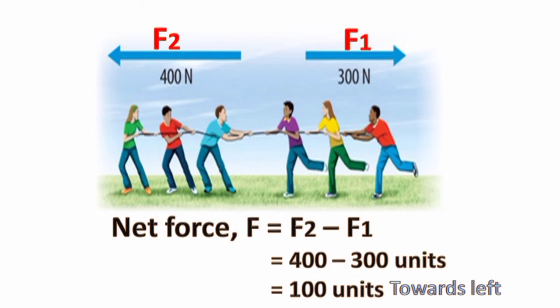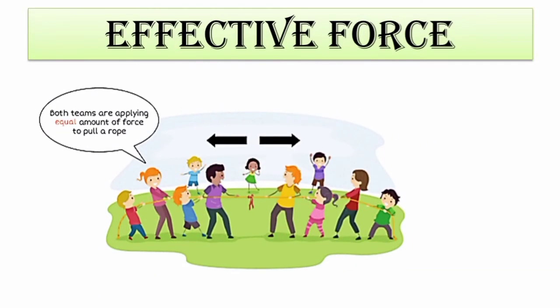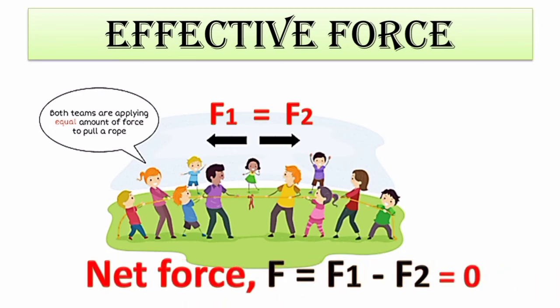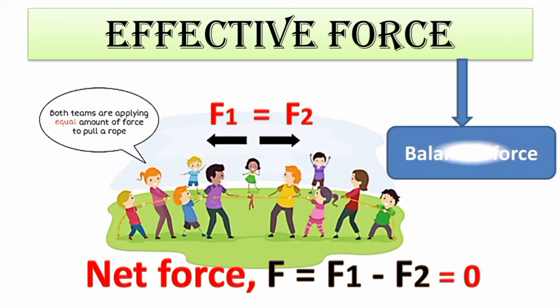What will happen if equal and opposite forces act on an object? Here, both teams are applying equal amounts of force to pull the rope—that is, F1 and F2 are equal. How will you find the net force here? Remember, since the forces are opposite to each other, the net force will be obtained by subtracting or finding the difference of the individual forces. Since F1 and F2 both are equal here, the net force will be zero. Such forces which are equal and opposite to each other are known as balanced forces.